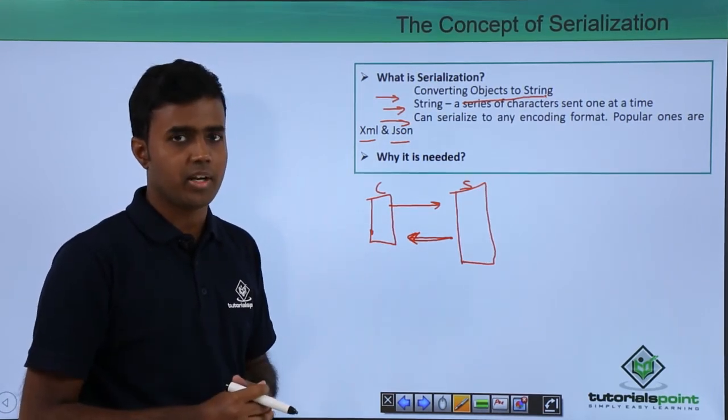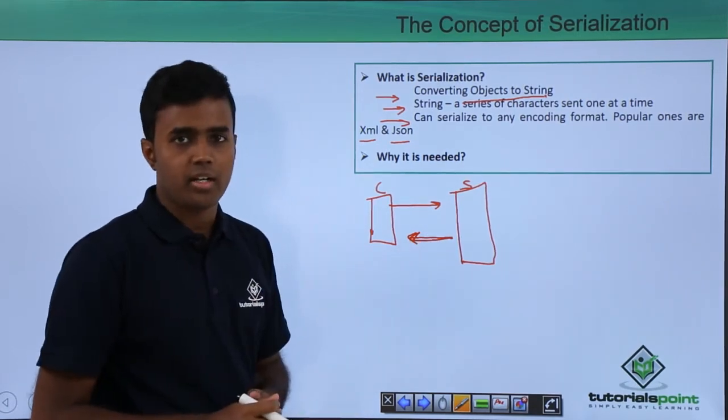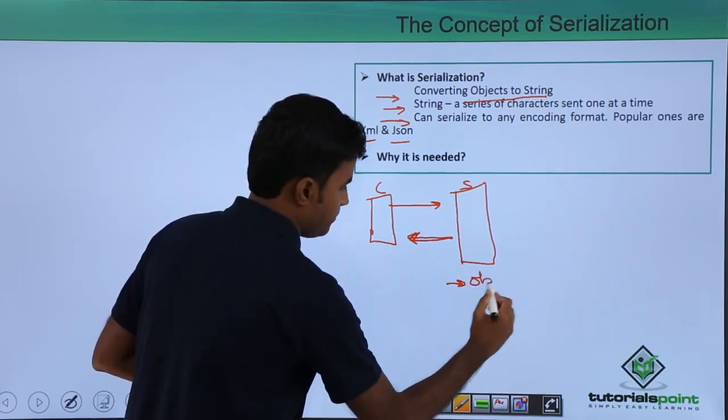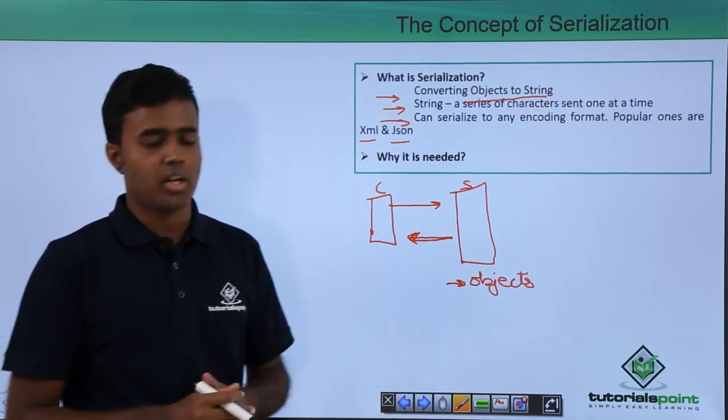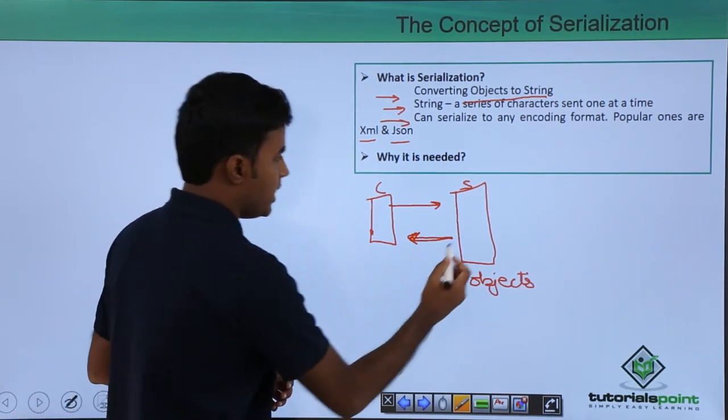In programming languages like .NET or Java, we usually work with objects. For example, you have a product object, or a customer object, or an employee object. But when we are sending the information or the objects to the client, we are sending the data on a real hardware infrastructure.